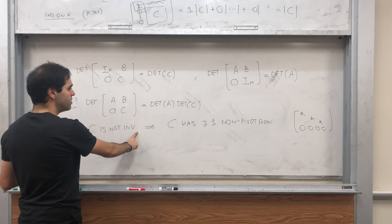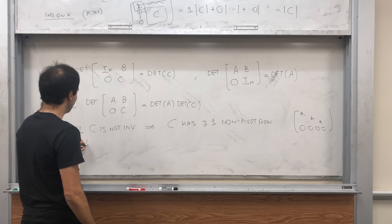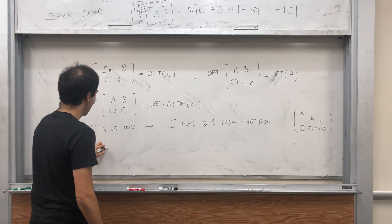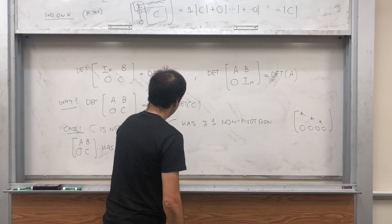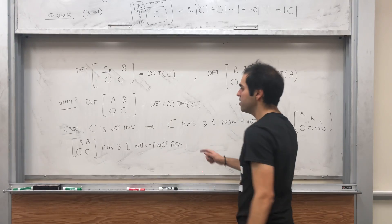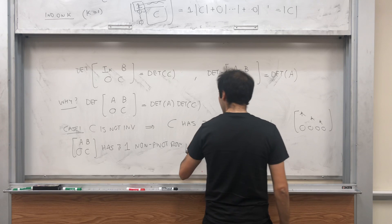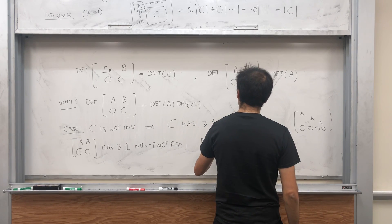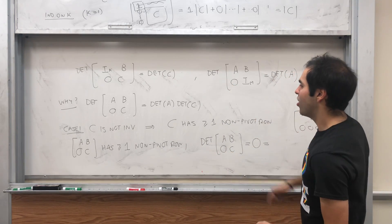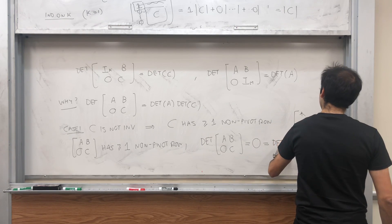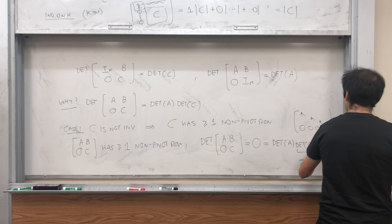So if C is not invertible, C has at least one non-pivot row, so [[A, B], [0, C]] has at least one non-pivot row. And because it doesn't have a pivot in every row, we get that this whole matrix is not invertible. So determinant of [[A, B], [0, C]] equals 0. But this is also equal to determinant of A times determinant of C, because C is not invertible.